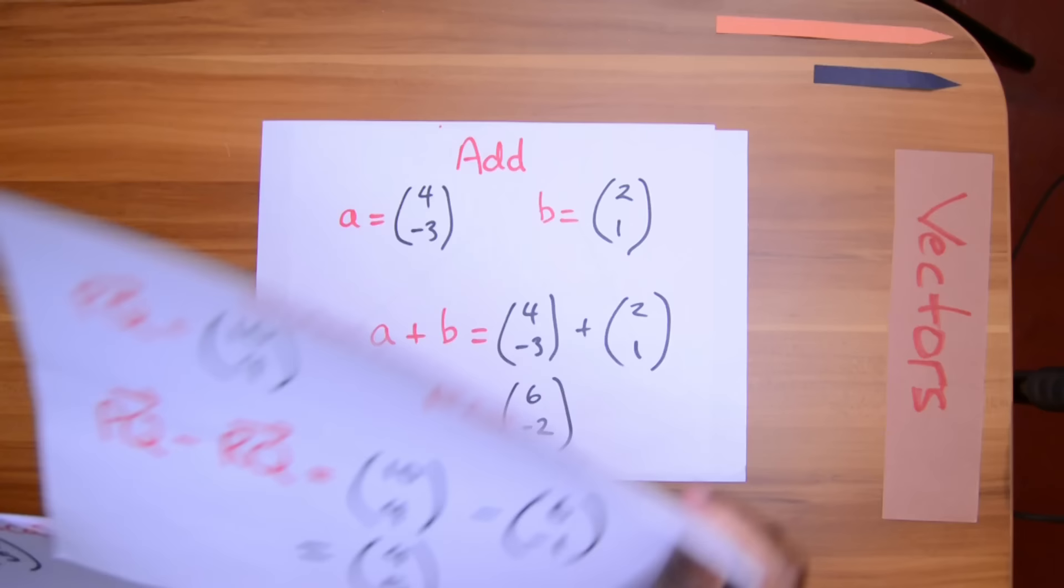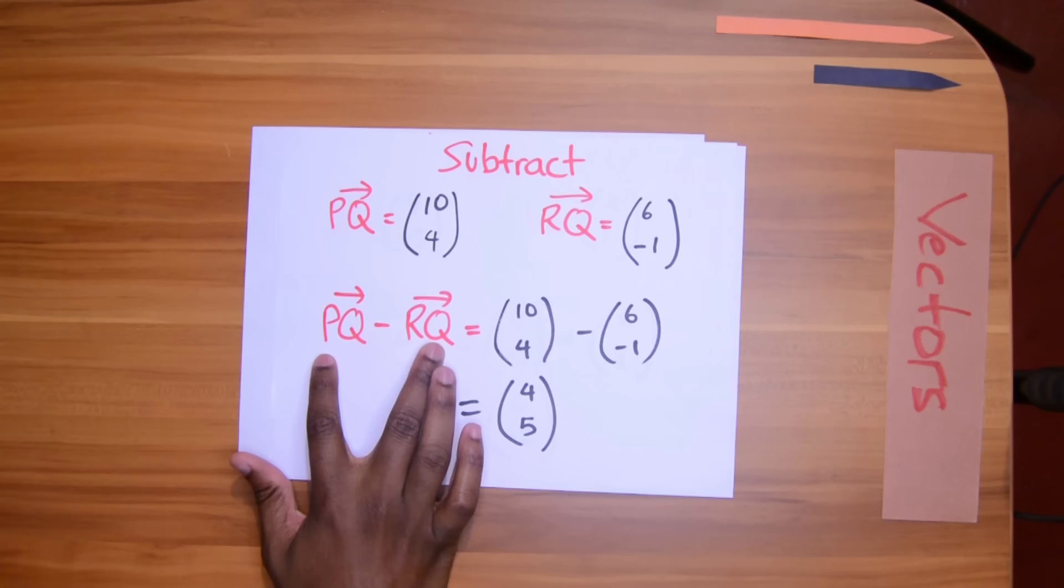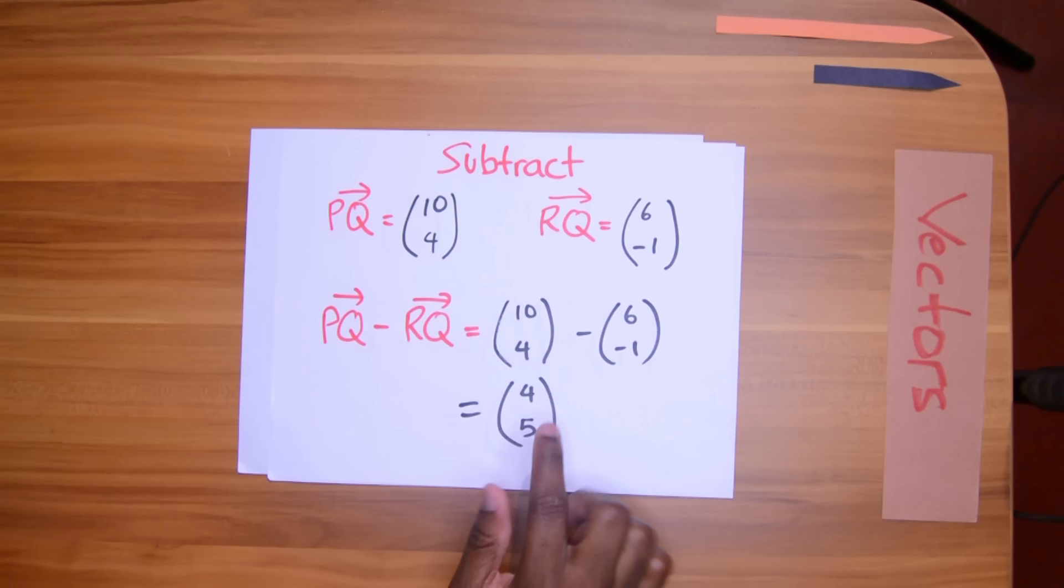We can subtract them. Vector PQ is equal to (10, 4). RQ is equal to (6, -1). If we subtract the vectors, very similar to addition, we use the X terms and the Y terms to arrive at our answer.